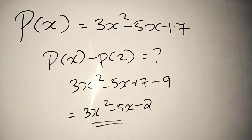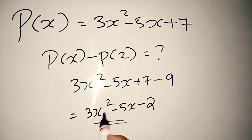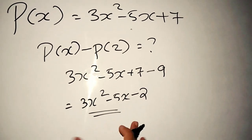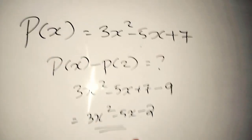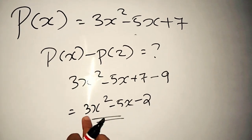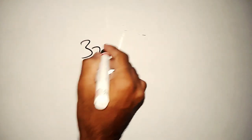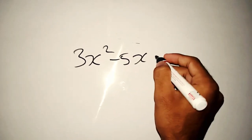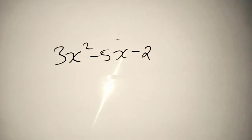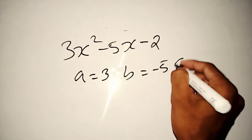Let's try this. In the 3rd year, P of x minus P of 2 is equal to minus. You can do the method of minus b plus 1 minus. You can factor in this method. 3x² minus 5x plus 2. You can factor in this method. A is equal to 3, B is equal to minus 5, C is equal to minus 2.